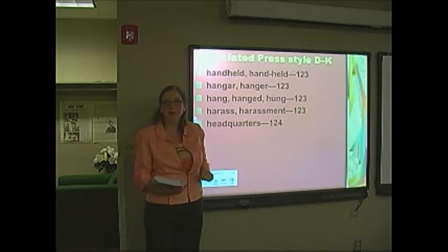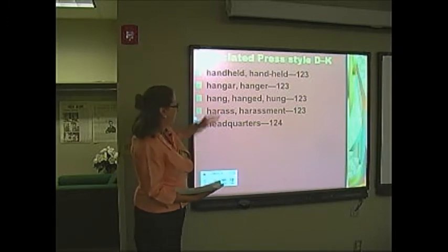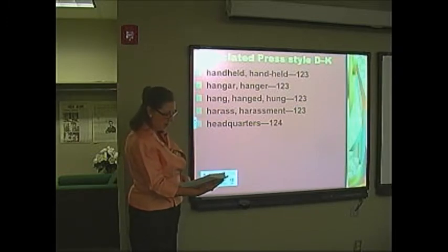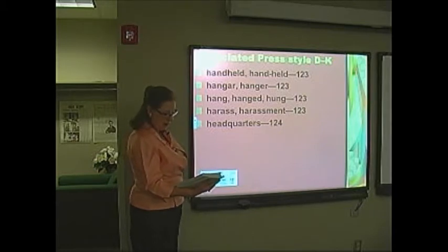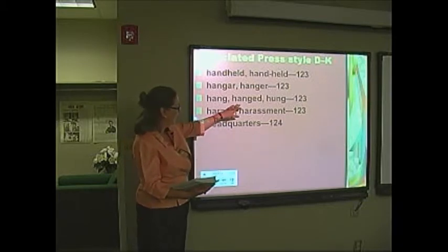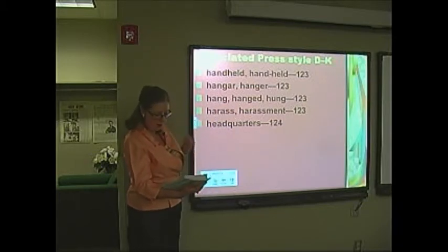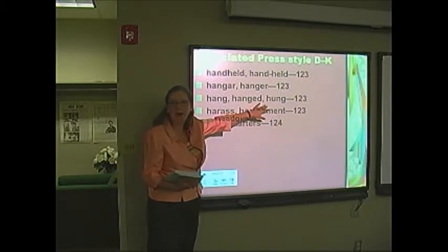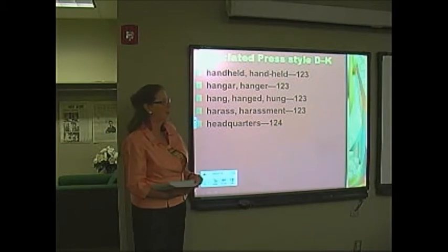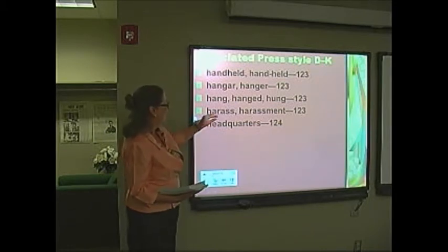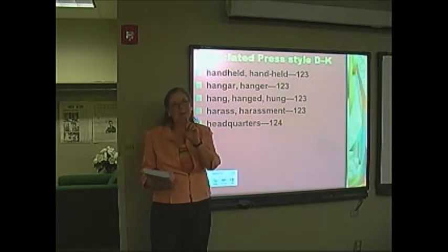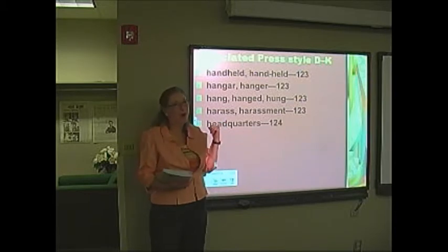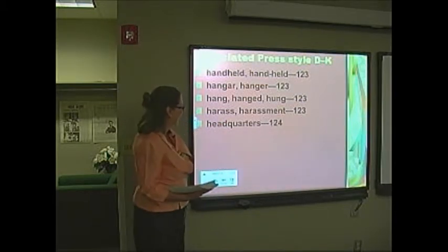Hanged and hung is the same idea as was drowned and drowned. You hang a picture, a criminal, or yourself. When referring to an execution, the past tense is hanged. For a suicide, it's hung. And then harassed — don't you love English? Embarrassed had two R's and two S's; harassed, not so much.